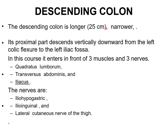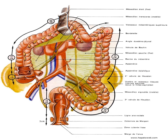About the descending colon — it is 25 cm long and narrower. Its proximal part descends vertically on the left from the left colic flexure to the left iliac fossa. During this course it passes in front of three muscles — quadratus lumborum, transverse abdominis, and iliacus — and three nerves: iliohypogastric, ilioinguinal, and lateral cutaneous nerve of the thigh.